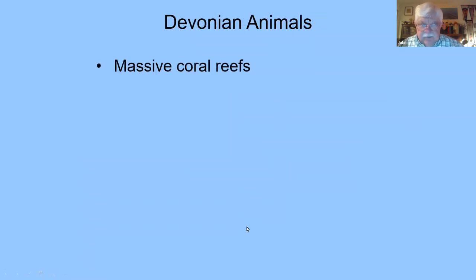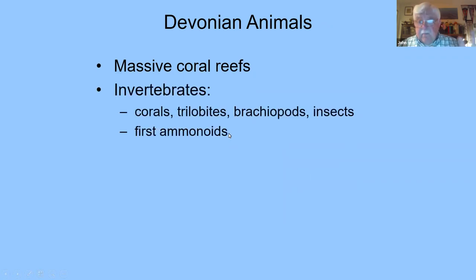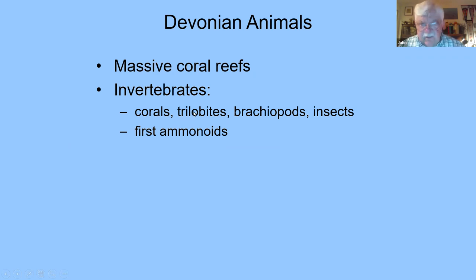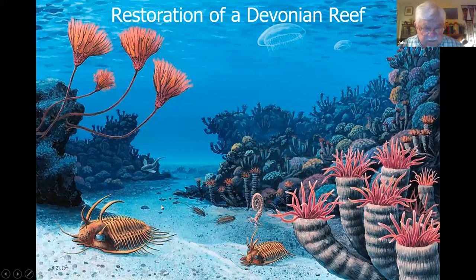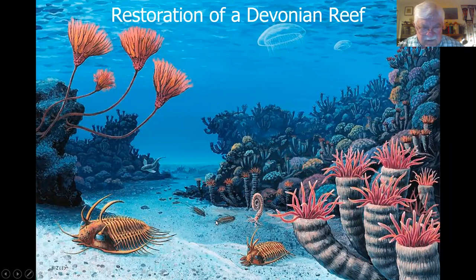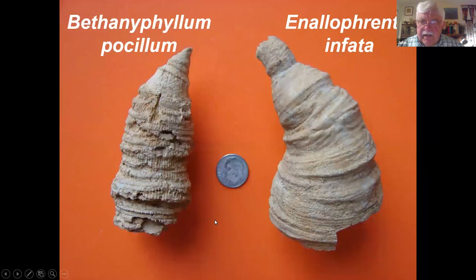Devonian animals - massive coral reefs became the centers for all animals. Invertebrates: corals, trilobites (which makes at least one person in our group very happy), brachiopods, insects, and the first ammonoids. Here's a restoration of a Devonian reef - they put in some elaborate trilobites and one small nautiloid and a fish, but believe me some nautiloids got a lot bigger than this, as you'll see.